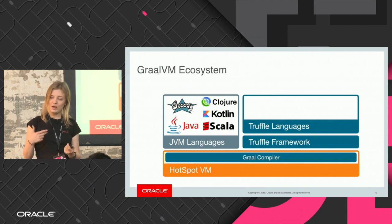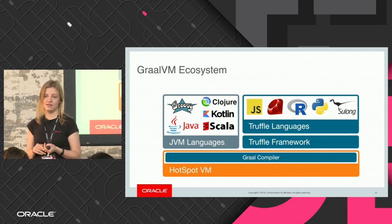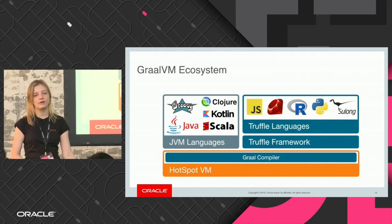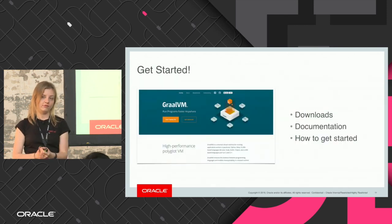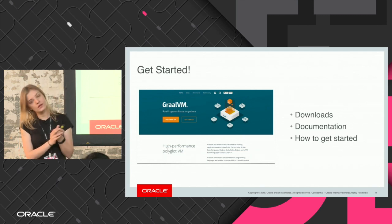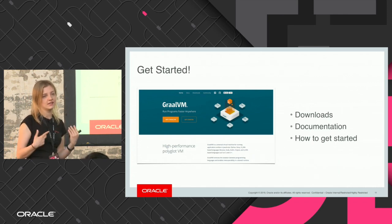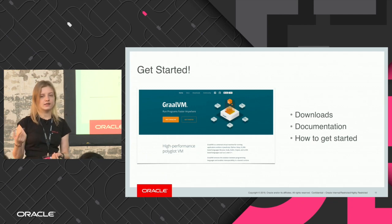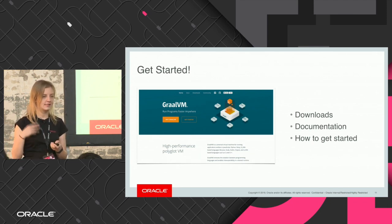To go a little deeper into what GraalVM can offer, here are all the languages we currently support. Sulong is our LLVM bitcode interpreter — that's our way of running native languages on GraalVM. If you're interested in getting started, I recommend going to graalvm.org where you can download GraalVM, go deeper into documentation for your particular use case, or read about how to get started. Also, if you are using one of the latest Java releases, the compiler part of GraalVM you can already use in your Java distribution — you just need to enable the external compiler.